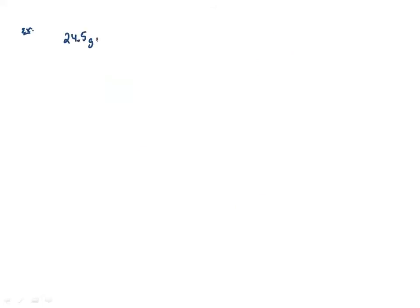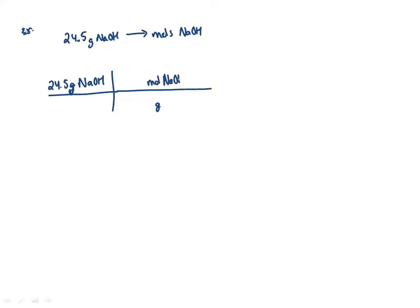Let's do some quick examples. Say I have 24.5 grams of NaOH and I want to convert that to moles of NaOH. We only have two or three conversion factors to pick from in this chapter. To go from grams to moles, we simply use molecular weight. NaOH is 23 plus 16 plus 1, about 40. So we take 24.5 divided by 40, and keeping track of significant figures — three sig figs — that's 0.613 moles of NaOH.